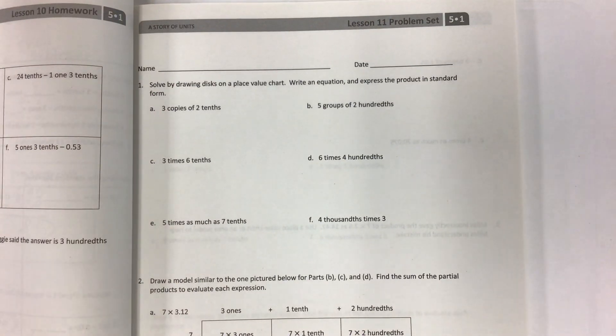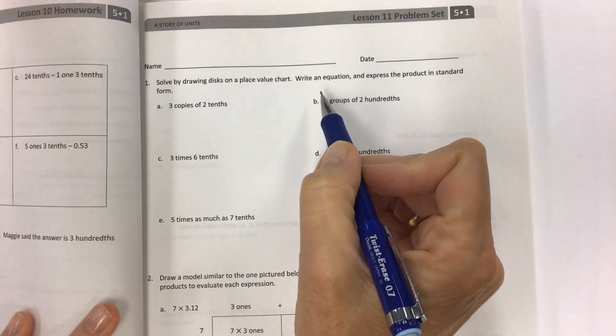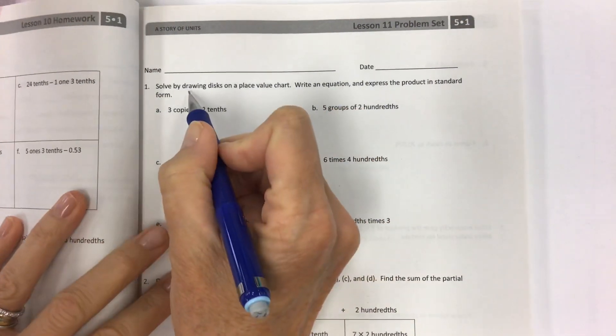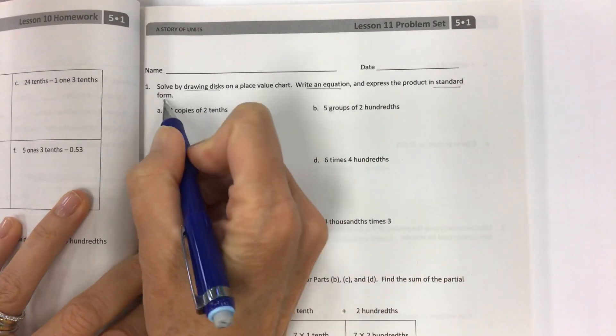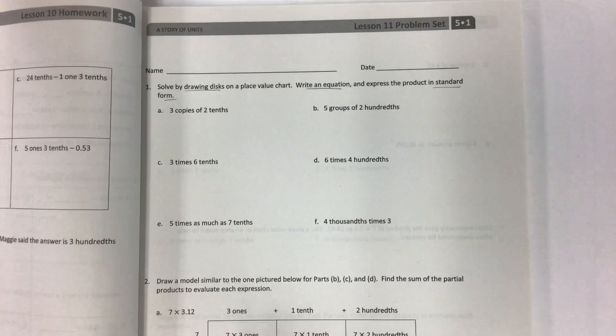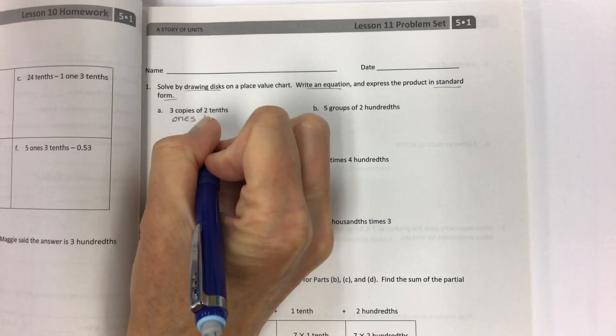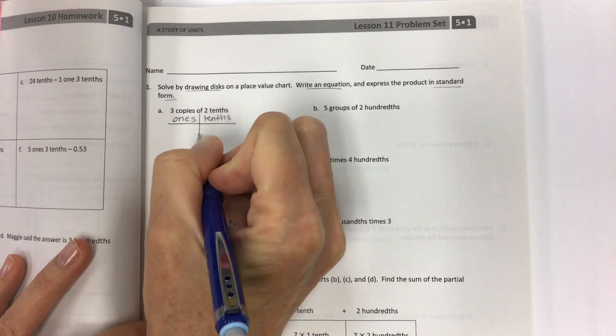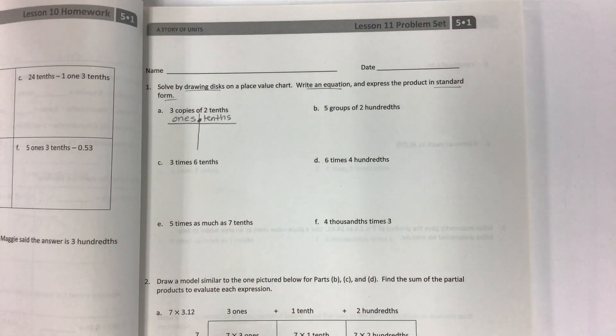Solve by drawing disks on a place value chart and so we're going to make like little mini charts all over the place. You also have to write an equation and express the product in standard form. So always underline what you have to do. You have to draw disks. You have to write an equation. You have to write in standard form. So if I have three copies of two tenths, I'm just going to make my little chart right here. Ones, tenths.